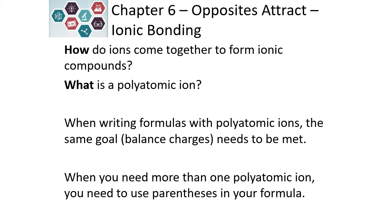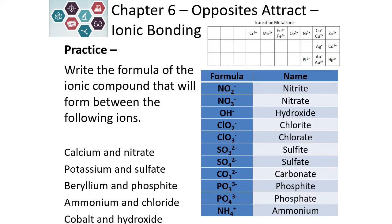When writing the formula of polyatomic ions, it is very similar to what we've done before. We still have the same goal of balancing the charges, and we might need more than one polyatomic ion. If we do, we need to include parentheses and put a number outside of those parentheses. For example, calcium is Ca²⁺ and nitrate is NO₃⁻. It is going to take two nitrates to combine with the calcium, so the formula is Ca(NO₃)₂ — the 2 goes on the outside of the parentheses.